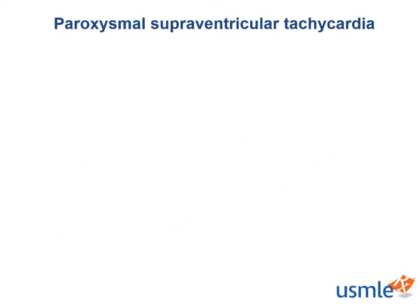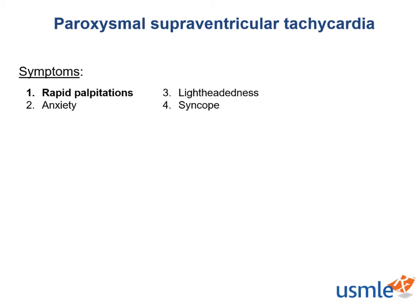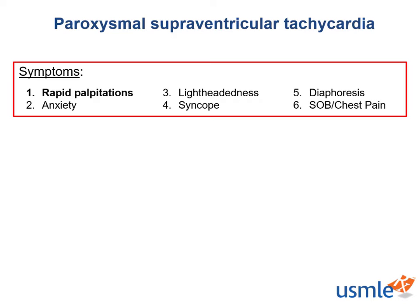The symptoms of PSVT classically include palpitations — importantly, sudden onset palpitations — which often lead to anxiety. Other commonly associated symptoms are lightheadedness with possible syncope, diaphoresis, shortness of breath, and chest pain. Among these, palpitations are the most common. Patients may say that their heart is racing or that they can feel the heartbeat really strongly in their chest.